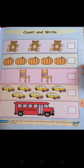Now children, go to the next page. Count and write. Teddy bears. 1, 2, 3. Three teddy bears. Pumpkin. 1, 2, 3, 4, 5. Five pumpkins. Chairs. Two chairs. 1, 2.